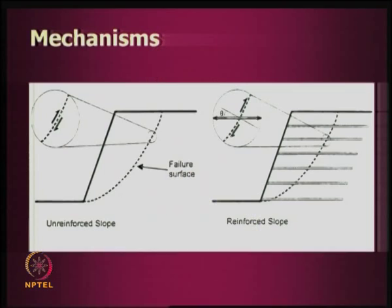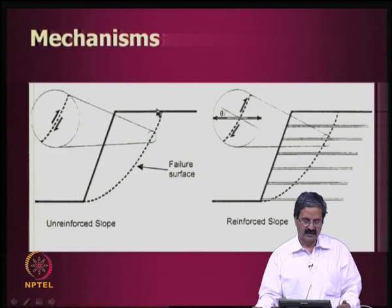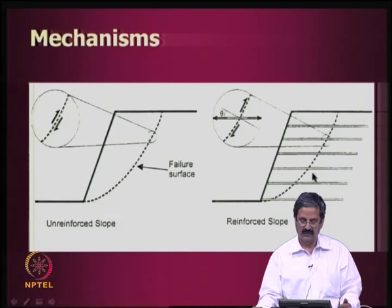Now let us understand the mechanism further. Consider an unreinforced soil slope with a shear resistance along the failure surface. On either side, there is tendency to fail and resistance along the failure line. Now if you put reinforcement — say 6 layers — at an inclination of angle θ to the failure surface, we need to see and quantify how it acts.